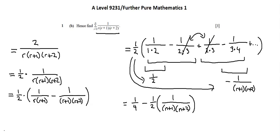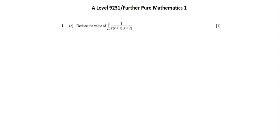Let's move on to part C. Deduce the value of the sum from r equals 1 to infinity of 1 over r times quantity r plus 1 times quantity r plus 2. From B, we have that the sum from 1 to n equals 1 over 4, minus 1 half times 1 over n plus 1 times n plus 2.